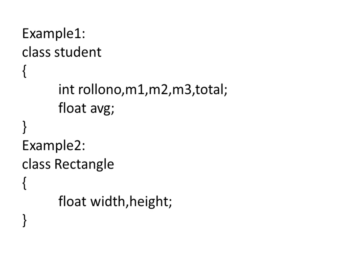Let us take another example. Here we have created a class called Rectangle where we have only two data members, that is the instance variables width and height, both of type float.